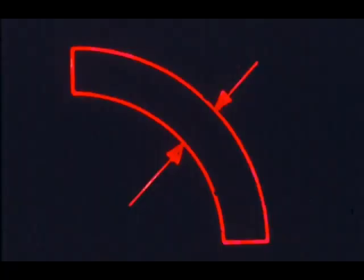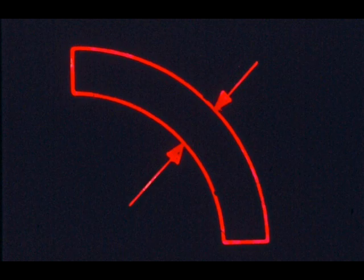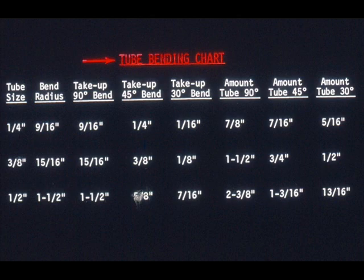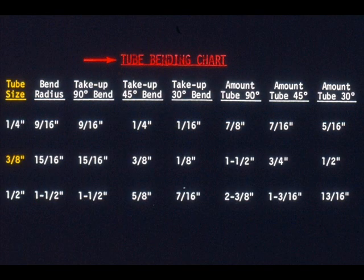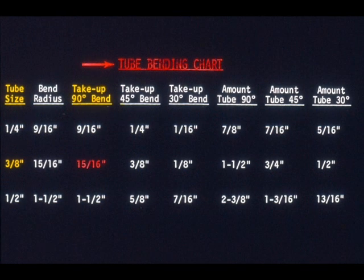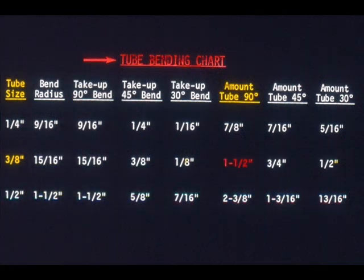For example, take this sketch — it shows a segment of bent tubing. This particular tubing is three-eighths inches outside diameter, and it's bent at a ninety-degree angle. By checking your chart, you can find both the take-up of this bend and the amount of tube required. Look under the column labeled tube size and locate three-eighths of an inch. Following the line straight across to the right, you'll find that the take-up for a ninety-degree bend is fifteen-sixteenths of an inch, and the amount of tube in the bend is one and one-half inches.